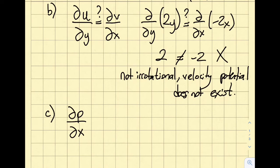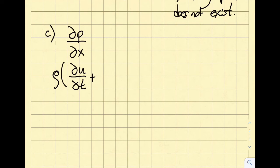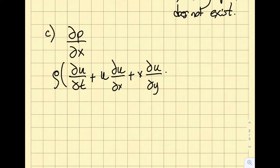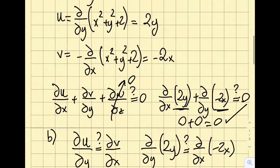What I must use is Euler's equation in the x-direction: ρ(∂u/∂t + u·∂u/∂x + v·∂u/∂y + w·∂u/∂z) = ρg_x − ∂p/∂x. The last term on the right-hand side, −∂p/∂x, is what I am being asked to find. With u = 2y and v = −2x, I will now insert these values.